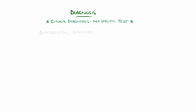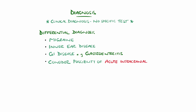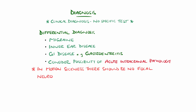Differentials include migraine, inner ear disease, or gastrointestinal disease such as food poisoning or gastroenteritis. Though development of symptoms in someone with risk factors for stroke, without previous motion sickness, acute intracranial pathology should be considered. There should be no focal neurological deficits on physical exam.